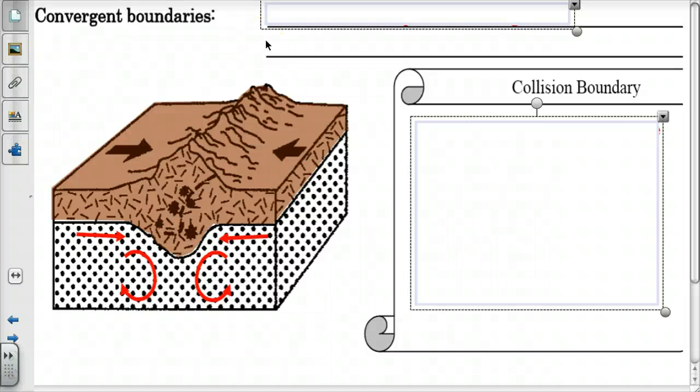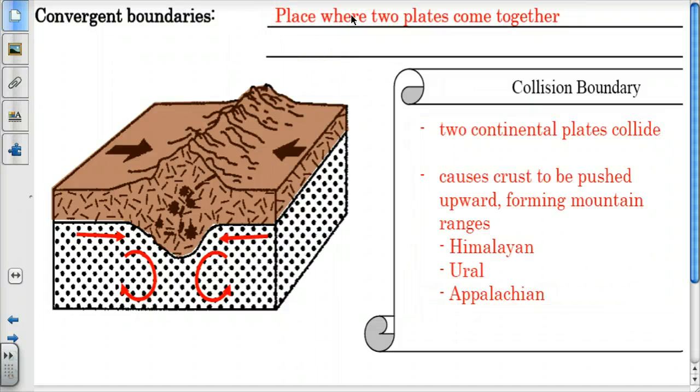We're going to talk about convergent boundaries now. We've already talked about divergent boundaries. We're also going to be looking at some of the maps that you worked with last week and this week to see how they relate to these convergent boundaries. A convergent boundary really is just a place where two plates come together.